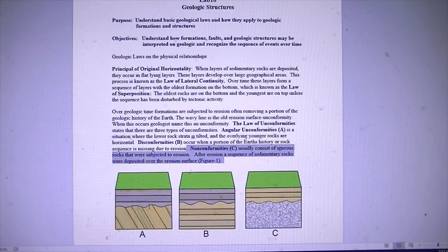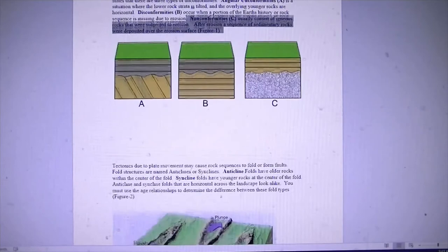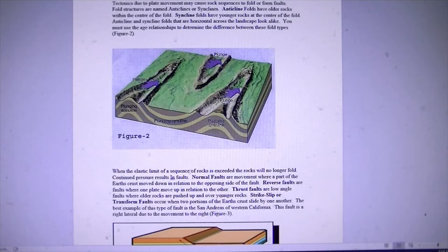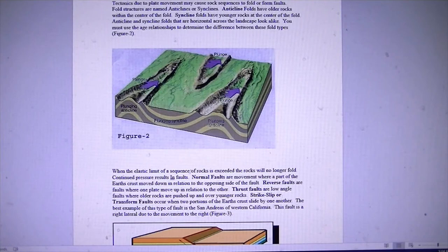Moving along to the next page — due to plate movement and continents colliding, compression is going to form fold structures. We name those fold structures according to whether they're folded upward or downward. Rocks that are upfolded are anticlines, and rocks that are folded downwards are synclines. We'll see anticlines and synclines in one of our puzzles today.